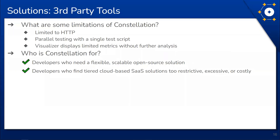In comparing Constellation with existing cloud solutions in terms of features, Constellation is currently limited to HTTP requests, parallel testing with a single test script, and the visualizer displays limited metrics without further analysis. Constellation is for developers who need a flexible, scalable, open source solution where cloud-based tiered SaaS solutions are too restrictive, excessive, or costly.